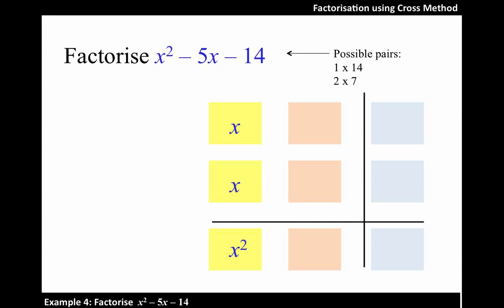Now, let's look at the middle term, which is negative 5x. Which pair of factors is likely the result of 5? 2 and 7.